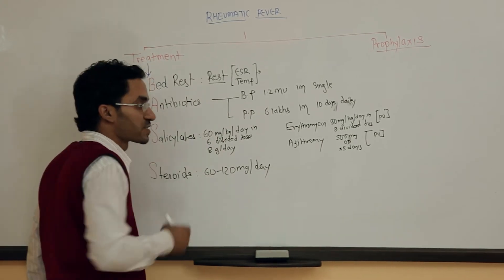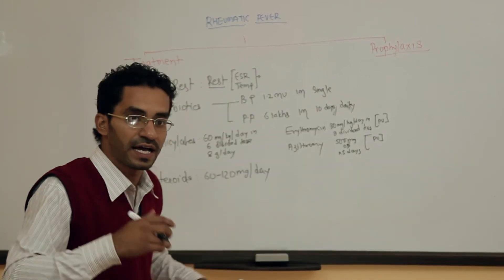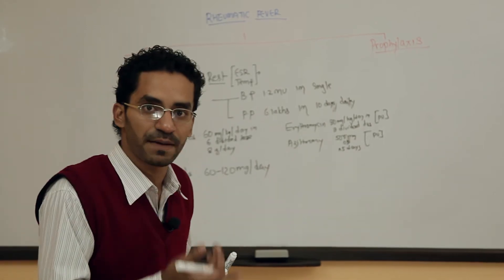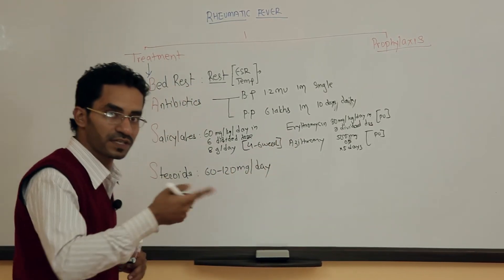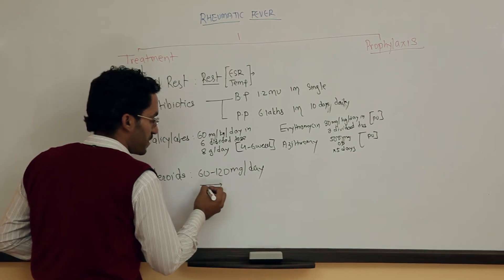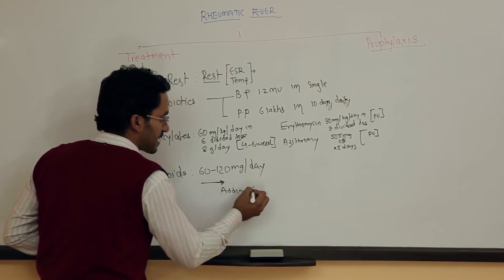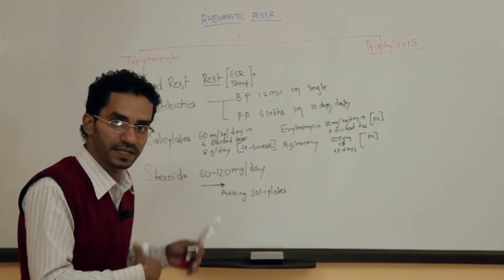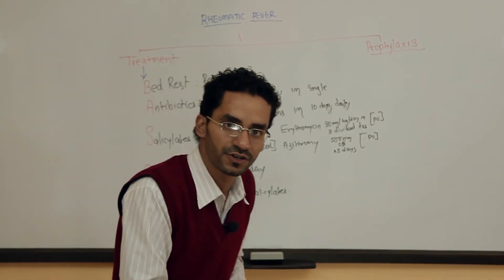Regarding duration: salicylates are used until ESR and temperature normalize, then tapered over the next 4 to 6 weeks after ESR is normal. Similarly, steroids are used in a tapering dose. When tapering steroids, we add salicylates toward the end — we use steroids for some weeks, then taper the dose of steroids while adding salicylates, and finally discontinue the drug.